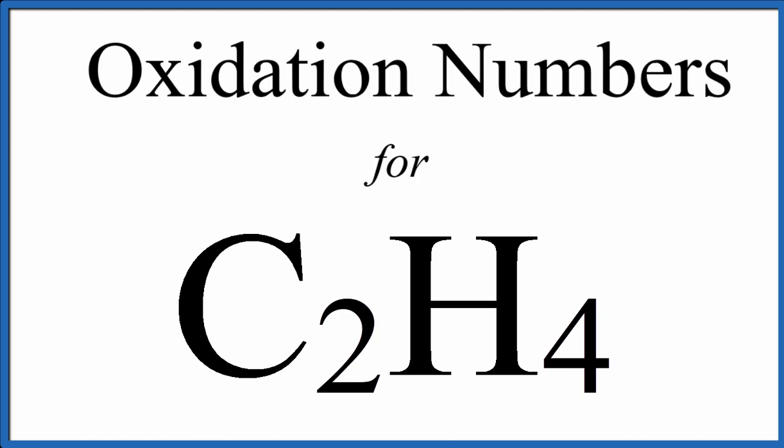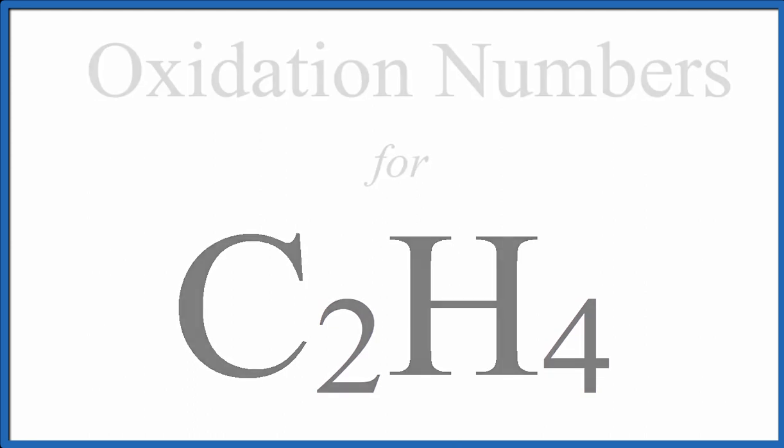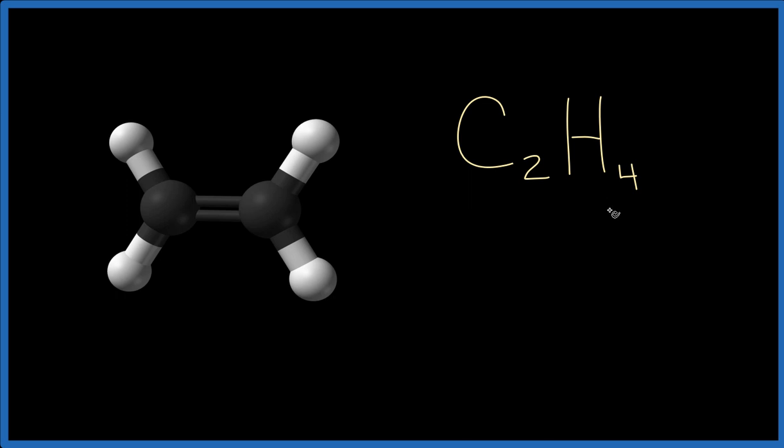For C2H4 ethene, if we added up the oxidation numbers for each one of these atoms here, we'd end up with zero. That's because this is a neutral molecule. There's no plus or minus charge written up here that would tell us that it's an ion.